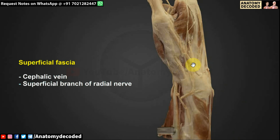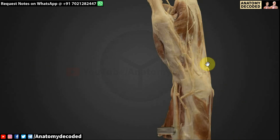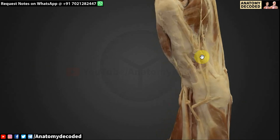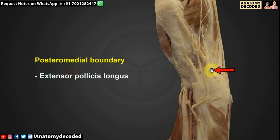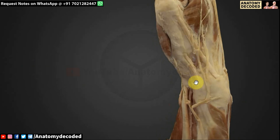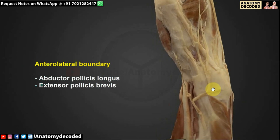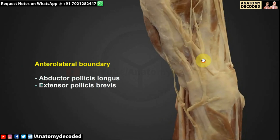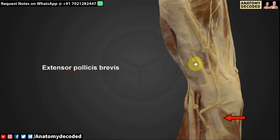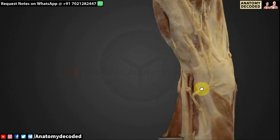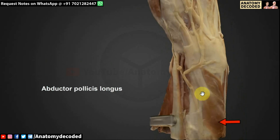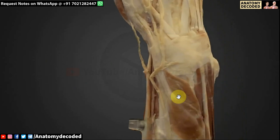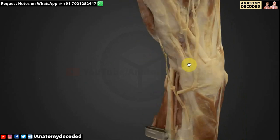For the side boundaries: this muscle is the extensor pollicis longus — the posteromedial boundary. The anterolateral boundary is formed by two muscles: abductor pollicis longus and extensor pollicis brevis. We can identify extensor pollicis brevis here, and this large muscle is the abductor pollicis longus. In dissection, these two muscles are seen together, while extensor pollicis longus is a separate muscle — that's how we can easily identify them.